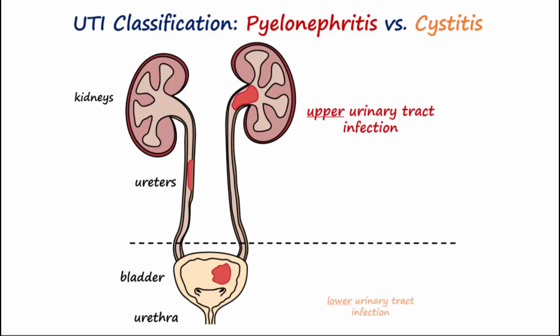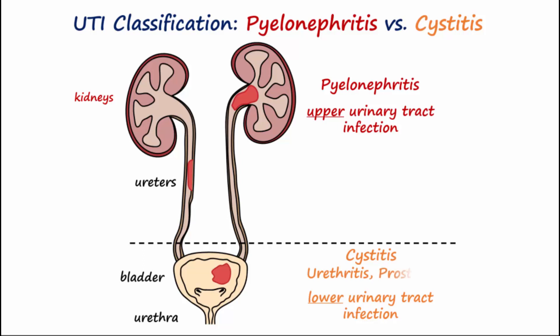UTIs can be divided into upper and lower infections. Pyelonephritis is an upper UTI that affects the kidneys. Cystitis, urethritis, and prostatitis are considered lower UTIs.